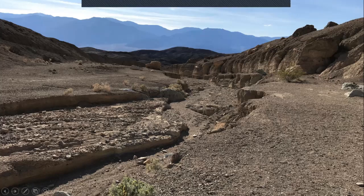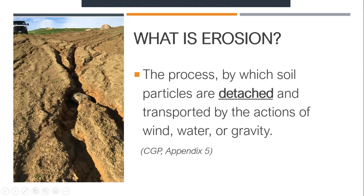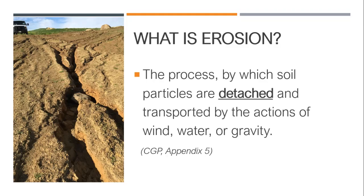So what is erosion? You guys know — I'm looking for one word. That one word I really want is: detached. It's when particles become detached. How do they become detached? They can become detached through different means — through water runoff, that's what we usually talk about with stormwater runoff, or through wind, or through gravity, or big cat dozers going through it. The construction general permit in the glossary, Appendix 5, gives the definition. That one word we really fixate on is detached. When a particle becomes detached from the ground, from the soil structure — that is where erosion starts, and that's where our focus starts.